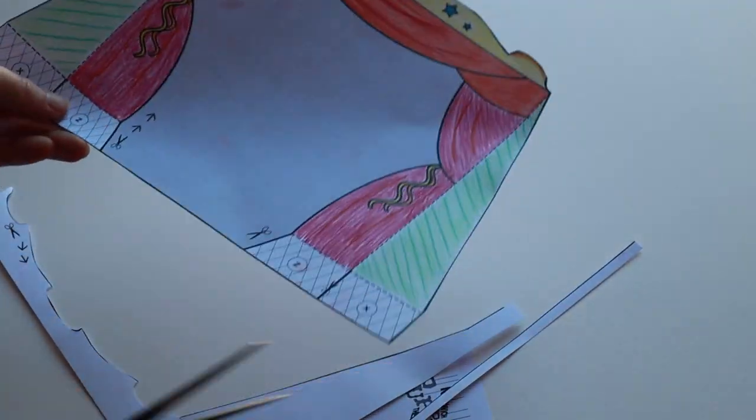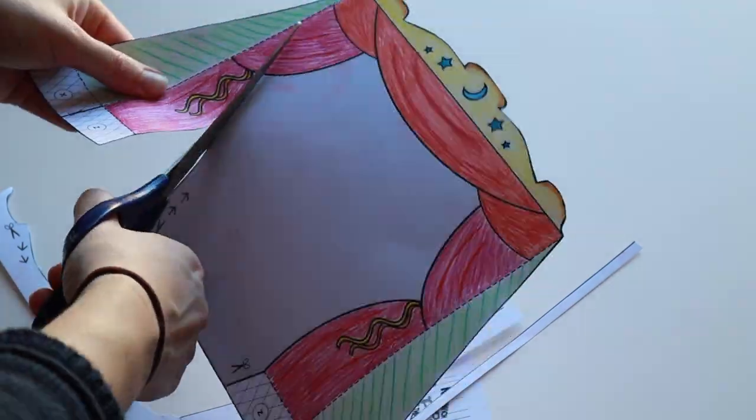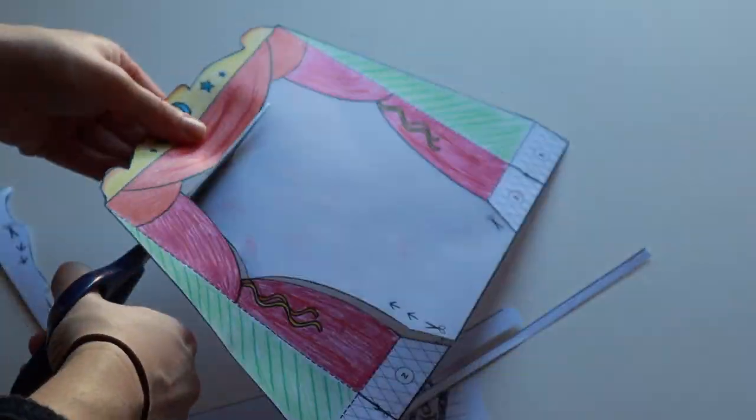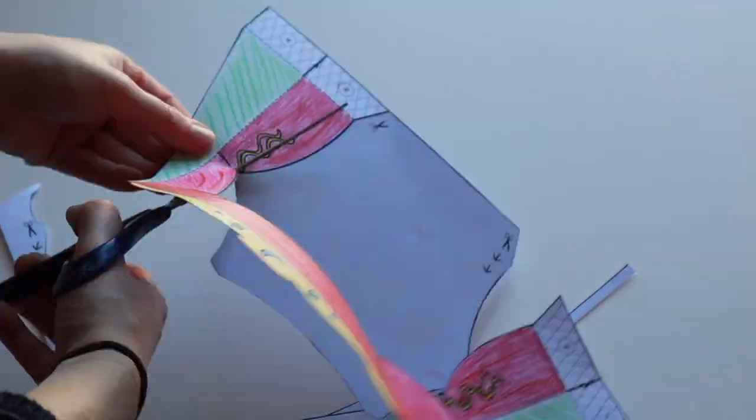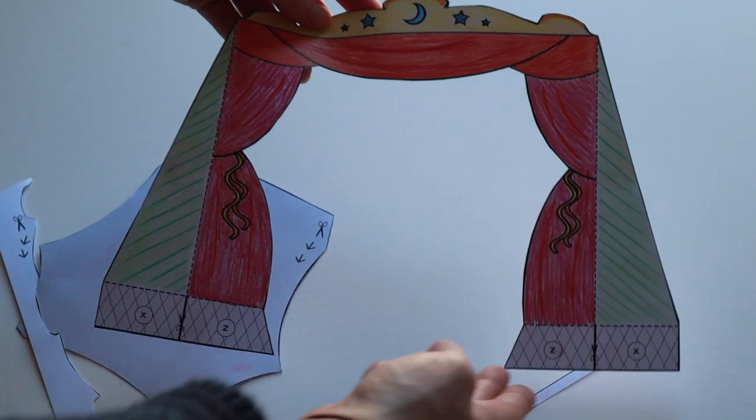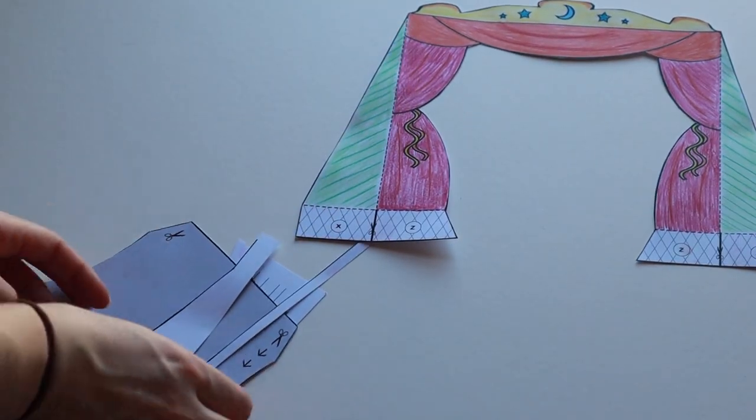Next you need to cut out the centre of your theatre. Try to cut around the edge of the grey shape as neatly as you can, because this piece can be used later to make your puppets. Keep the spare pieces, don't throw them away.